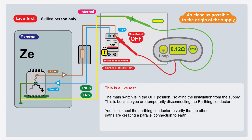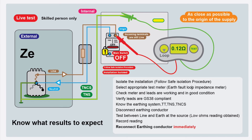We're ready to do our ZE test. This is a live test — the main switch is off, isolating the installation from the supply, because we are going to temporarily disconnect the earthing conductor to verify that no other paths are creating a parallel connection to earth. This is a live test which should only be done by a skilled person, but during training you'll be assisted by someone with the relevant skills and knowledge. So first, safe isolation — check that everything is switched off before disconnecting the main earthing conductor.